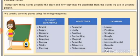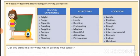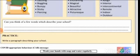They may be dissimilar from the words we use to describe people. We usually describe a place using the following categories: appearance, adjectives, location, and experience. Now think of a few words to describe your school and practice writing a paragraph describing your school.